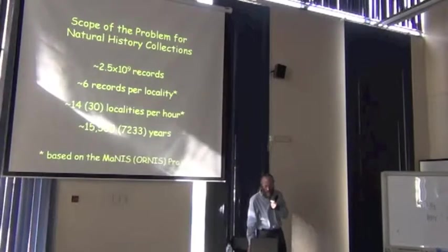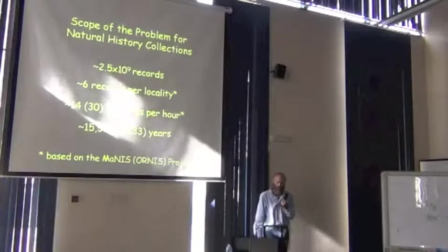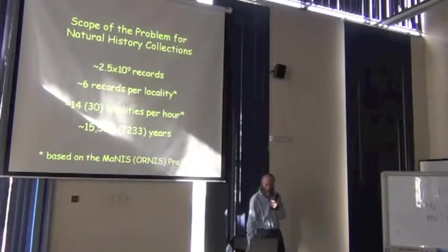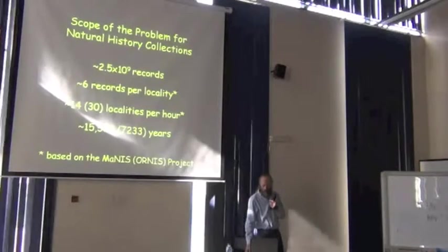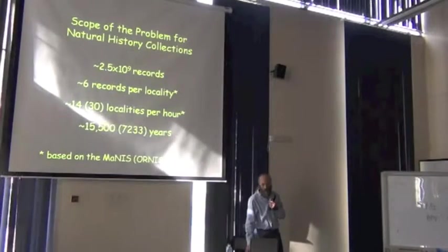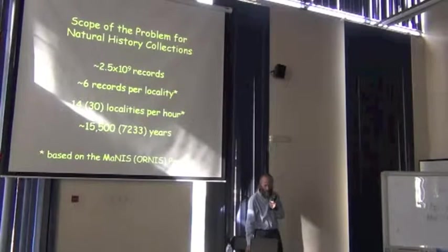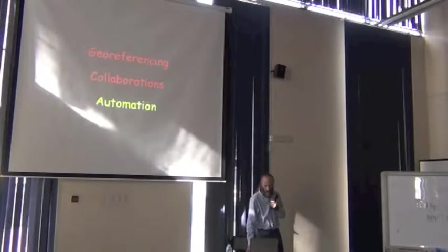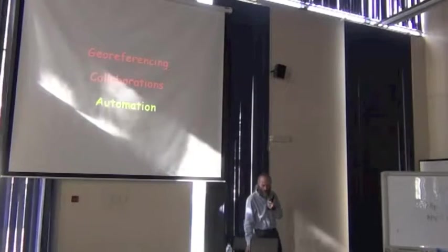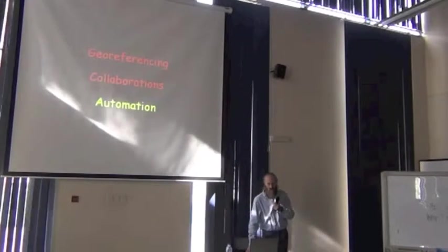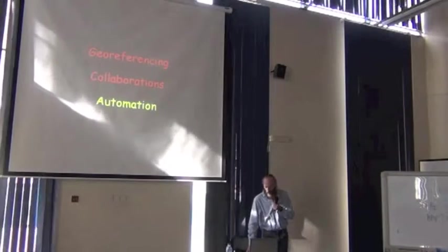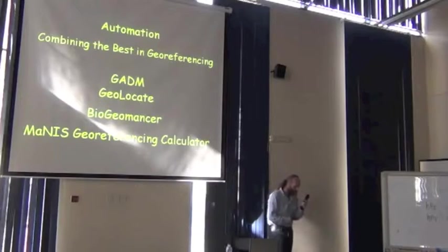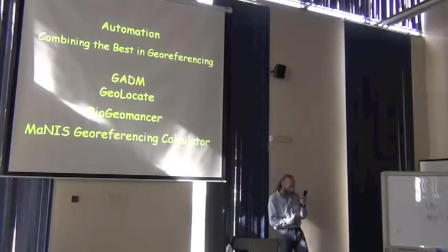We have to do better. Even if you look at the situation for ORNIS, which only doubled the locality per hour rate, we're still talking about more than 7,000 years to georeference all of biodiversity. This is where automation comes in, right? And it's where the increases in speed between MANIS and ORNIS occurred.